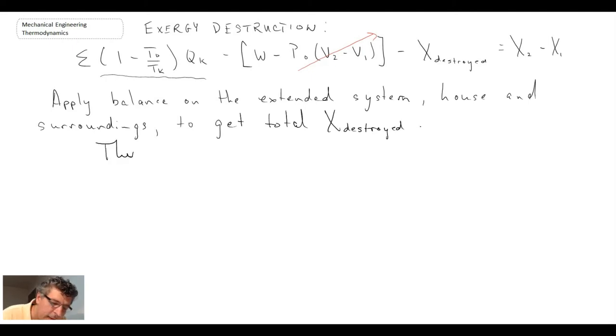So, with that, what we can say is that T_k, in the first term of the equation, is equal to T_0, which is equal to 276 Kelvin. And the beauty of that is that that term disappears. So, with that, what are we left with for the exergy balance equation?